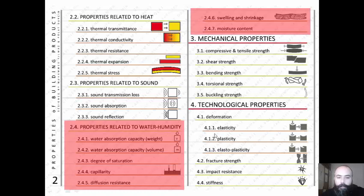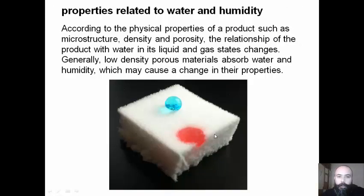Properties related to water and humidity. According to the physical properties of a product, such as microstructure, density, and porosity, the relationship of the product with water in its liquid and gas stages changes.